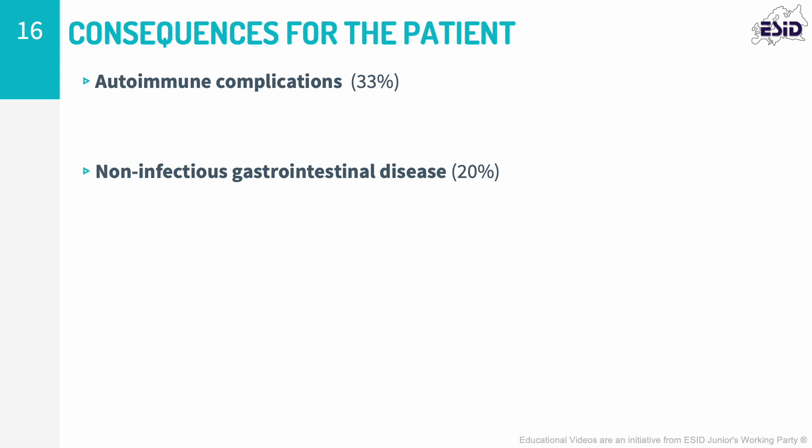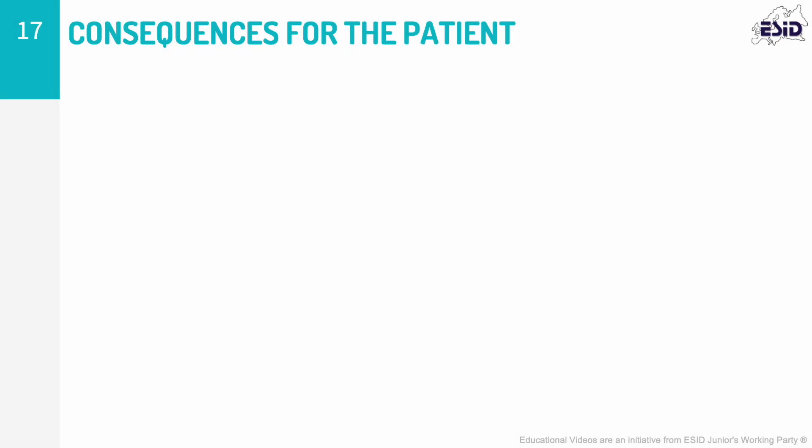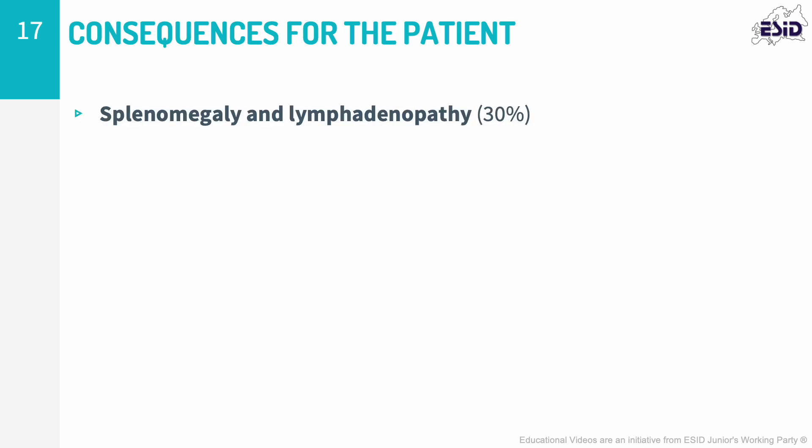Patients with CVID may also develop non-caseating granulomas in lymphoid tissue or solid organs, including the lung, lymph nodes, liver, intestine, brain, or skin. Common manifestations include lymphadenopathy, splenomegaly, or pulmonary symptoms mimicking a sarcoid-like disorder. GLILD — granulomatous lymphocytic interstitial lung disease — can occur in these patients. Chronic lung disease is a common problem, leading to recurrent hospitalizations and significant morbidity and mortality. Approximately one third of patients have chronic lung disease by the time of diagnosis, and CT scanning is essential as lung function tests cannot adequately differentiate bronchiectasis from secondary fibrosis due to GLILD.